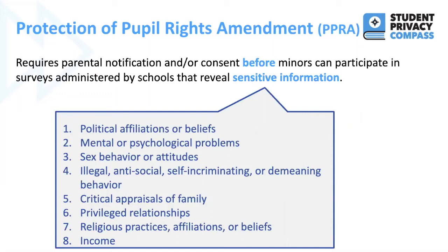This sensitive information includes eight categories: political affiliations or beliefs; mental or psychological problems; sex behavior or attitudes; illegal, antisocial, self-incriminating, or demeaning behavior; critical appraisals of family; privileged relationships; religious practices, affiliations, or beliefs; and finally, income.